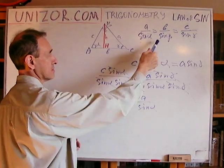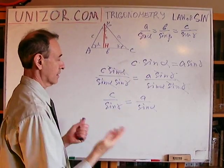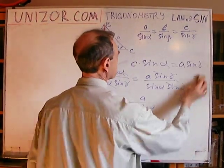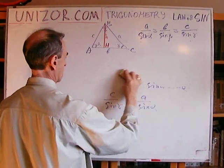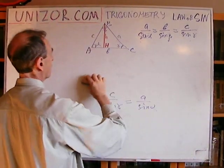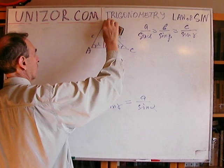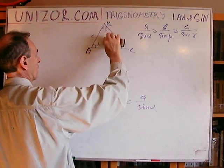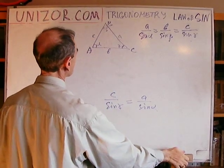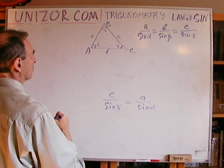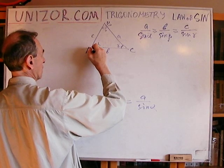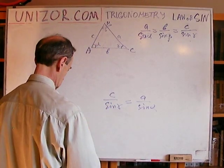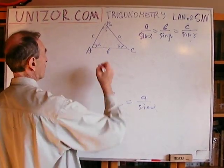So, forget about H now. And let's rewrite this as we can divide by sine alpha times sine gamma. They are not equal to zero, so we can safely divide it. And what will be? C sine alpha divided by sine alpha sine gamma equals A sine gamma divided by sine alpha sine gamma. And what do we have? C over sine gamma equals A over sine alpha.